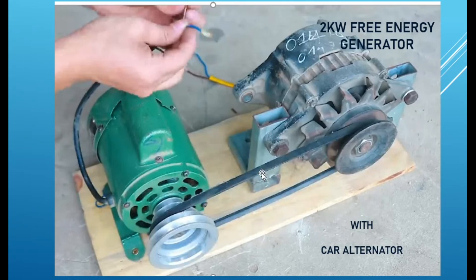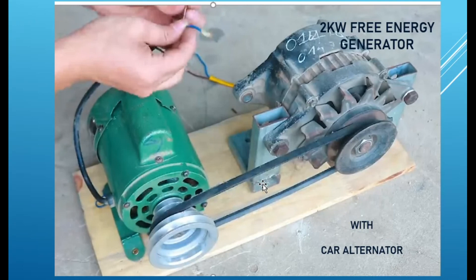Some people make the mistake of using a bare or weak belt, and if it is weak, you will not get the light because the belt is the burden carrier in this case. You have two systems here, and the belt is the major connector between them. You should make the belt very firm so that it is able to rotate properly when expected.